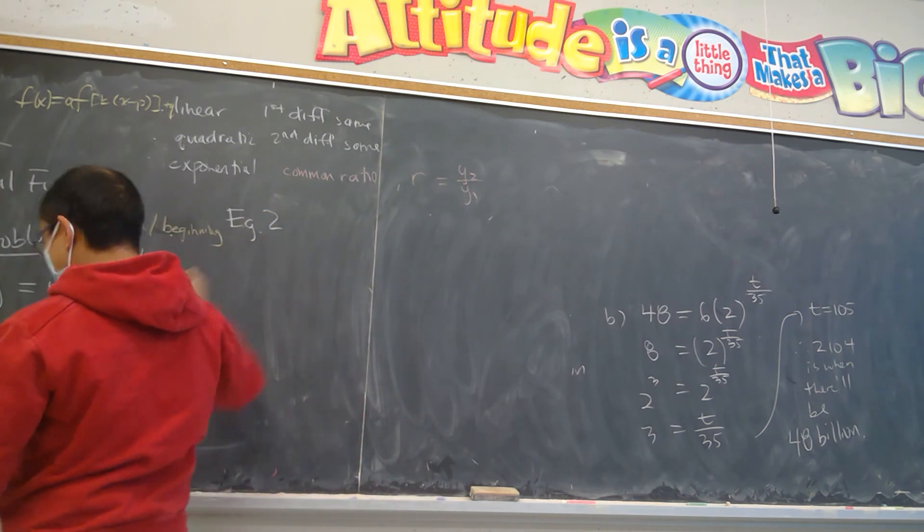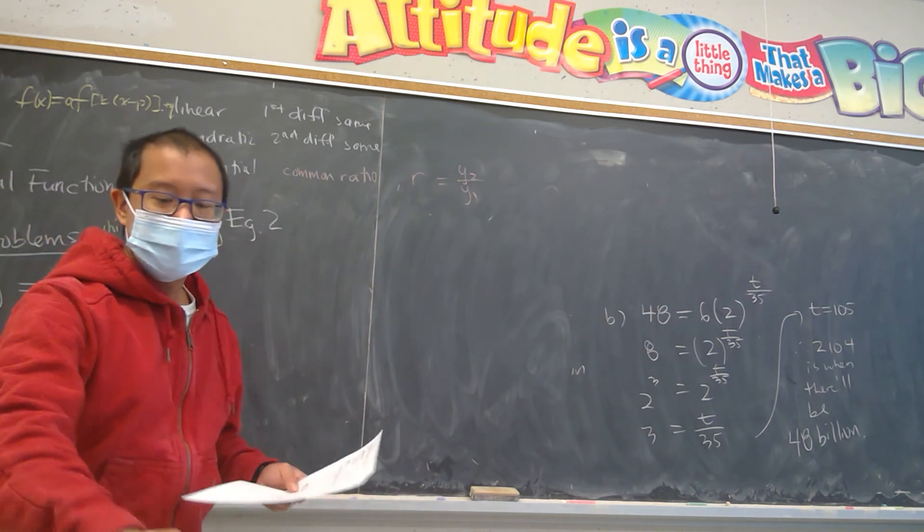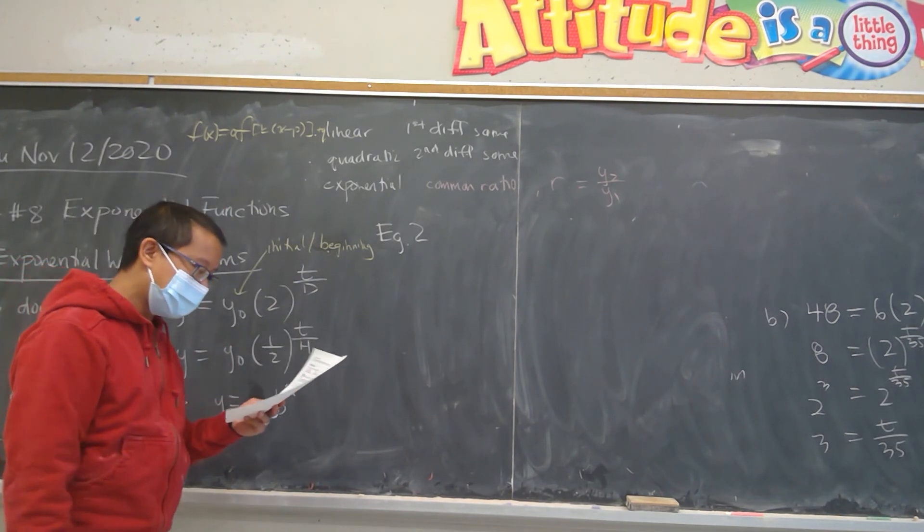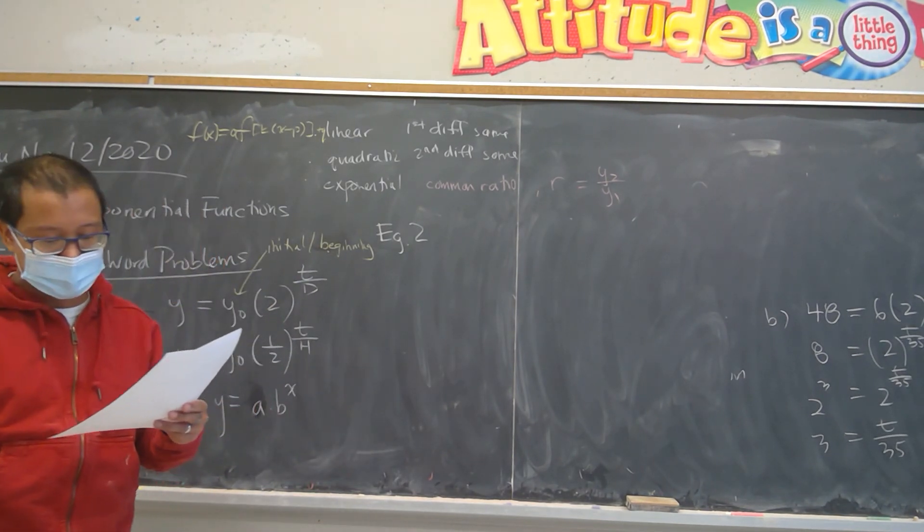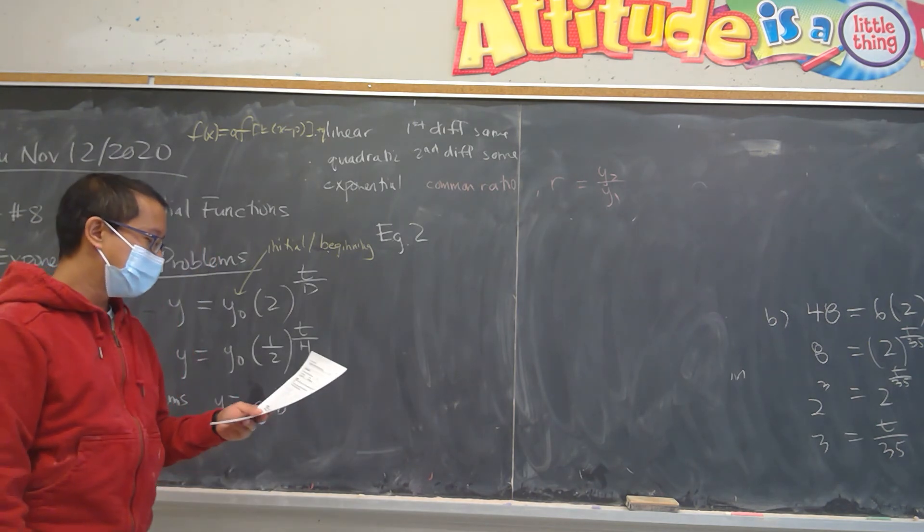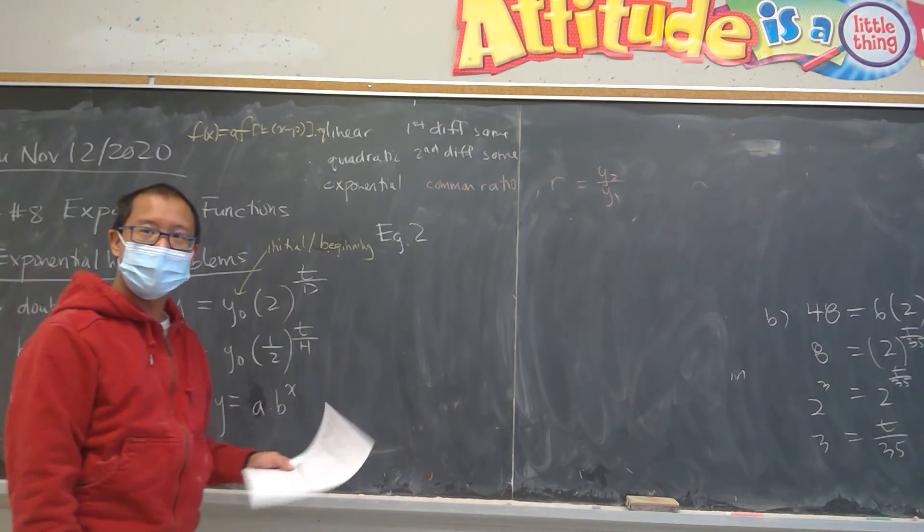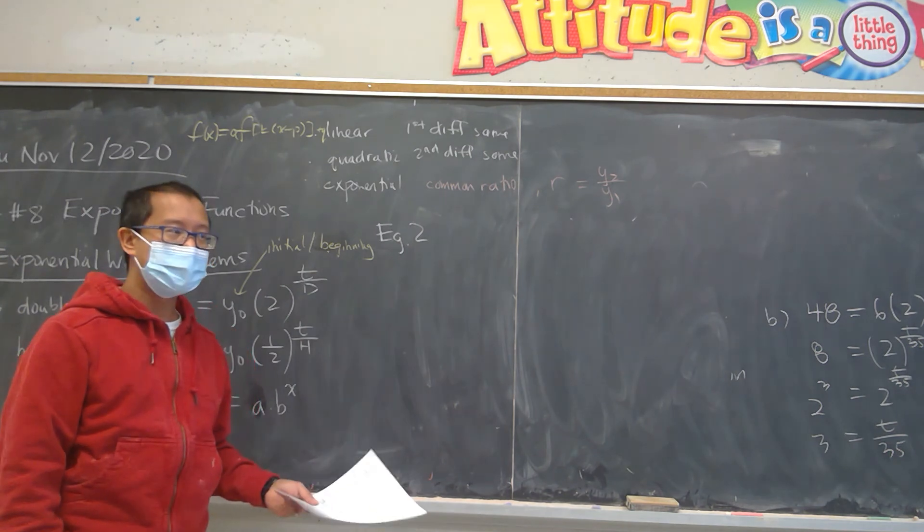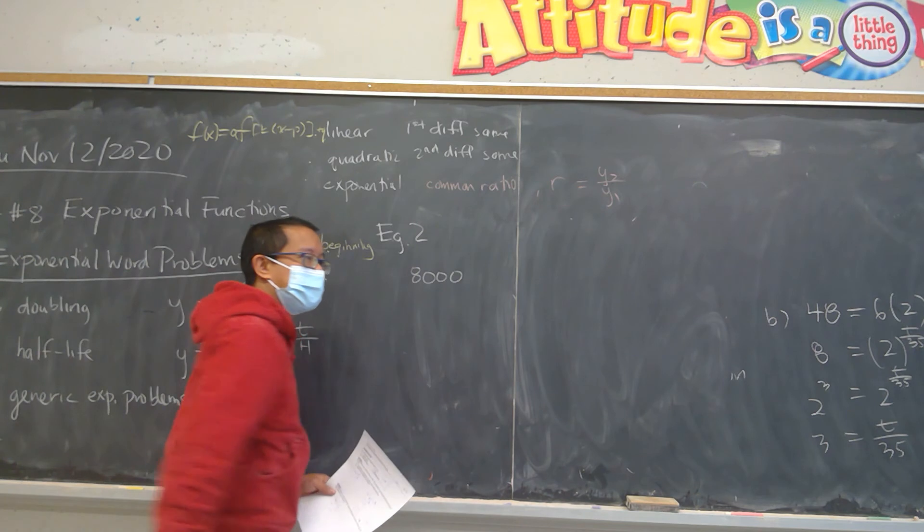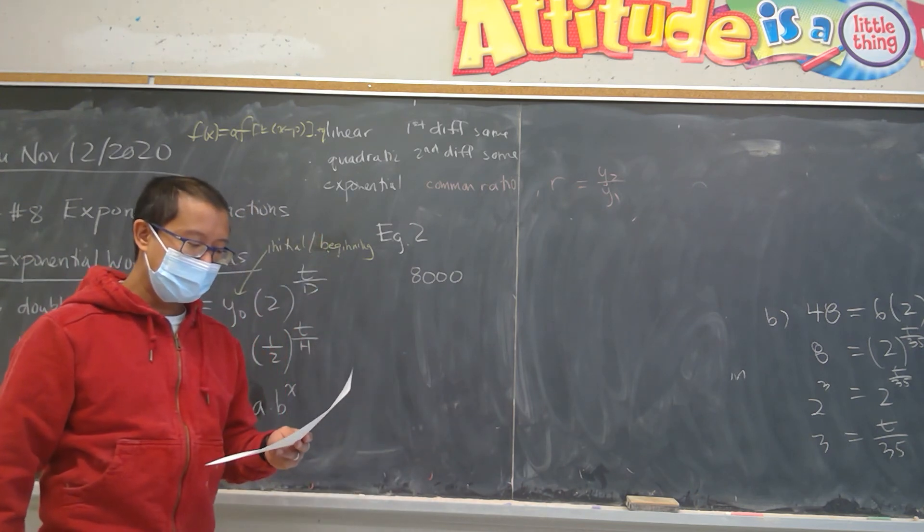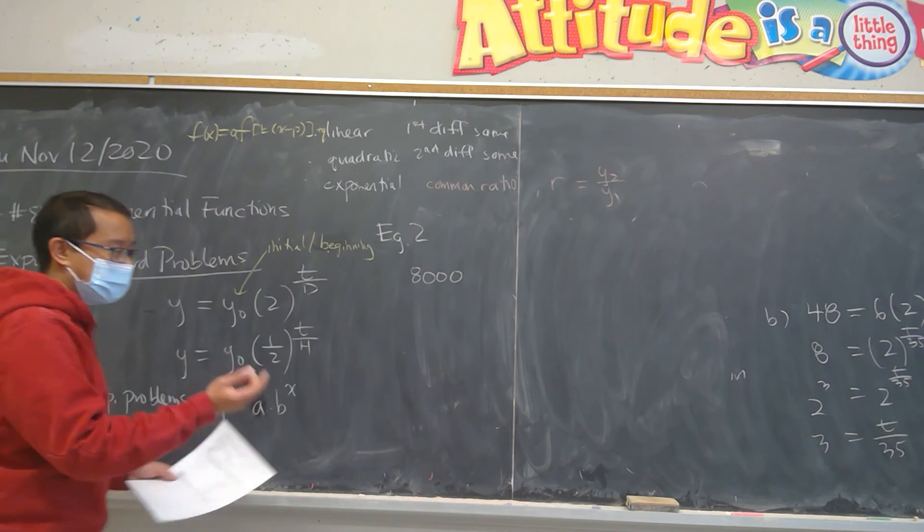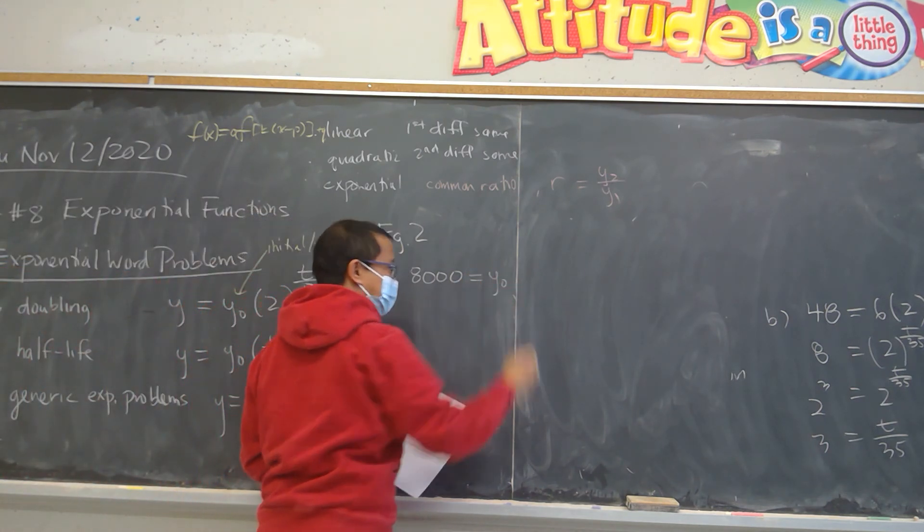For example two, it says the number of insects in a colony doubles every month. If there are 8,000 insects after five months, what is the initial number of the insects in the colony? So I think everyone agrees that the 8,000, that's the amount. And so what is the initial number? So we're already letting you know the initial is what we're trying to find. So that's our y-naught.